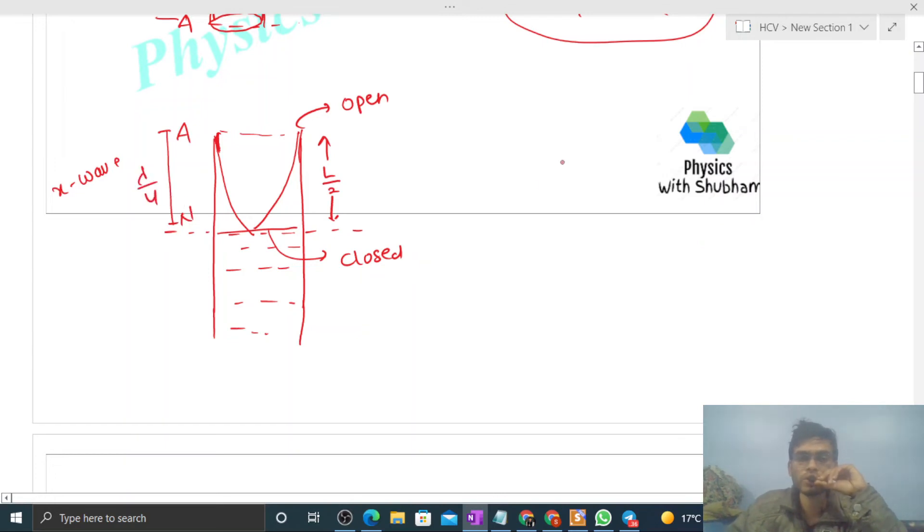So λ/4 will be L/2, right? So we can say wavelength will be simply twice of L. And again, frequency will be speed divided by wavelength, so it will be speed divided by 2L.